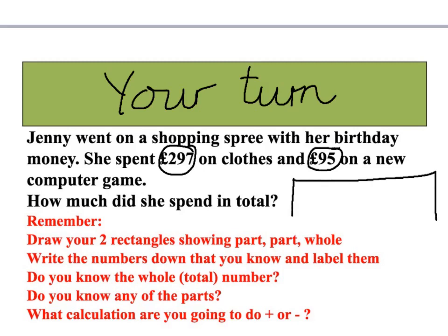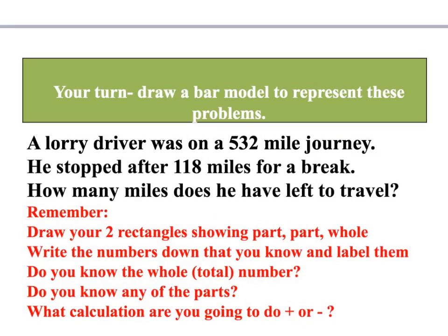This is what I drew. Jenny went on a shopping spree with her birthday money. She spent £297 on clothes and £95 on a new computer game. How much did she spend in total? So we don't know the whole number — our question mark will be there. We know she spent £297 on clothes and £95 on a computer game. To find my whole, if I've got two parts, I need to add. Once you've read the problem, press pause and have a go yourself, and once you've had your go, have a look and see what I've done.